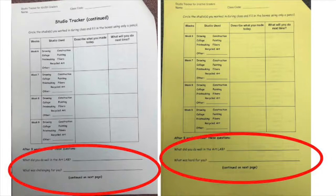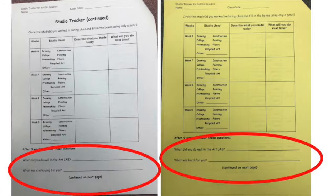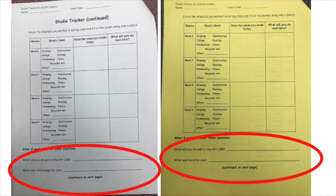The second question is: what was challenging or hard for you? Your answer might be about a specific artwork, studio, technique, studio habit of mind, or a behavior choice. Think of one thing that was difficult for you. You might have overcome this challenge, or you might still be working on it.